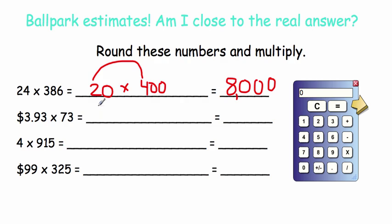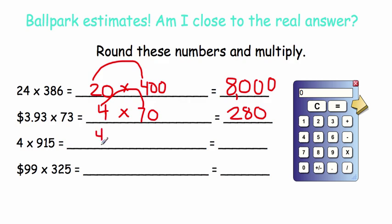For 4 times 915: in the ballpark estimate, do 4 times 900, since 900 is close to 915. Four times nine is 36, add two zeros — so three thousand six hundred. Four times 915 is about 3,600.